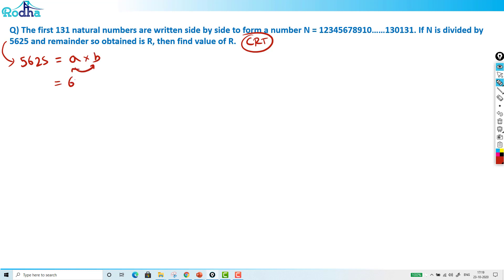So I'm splitting A into B such that A and B should be co-prime with each other. So I'll split 5625 into 625 times 9. Now I know the rule for both these numbers. Let me write this big number as N actually.